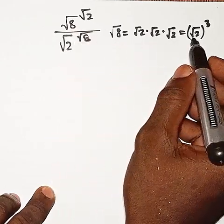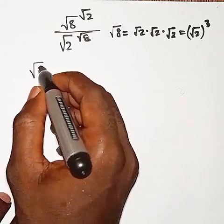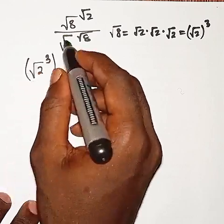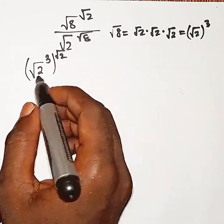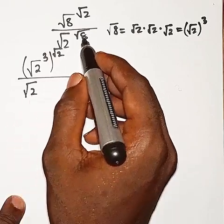We are going to rewrite this root 8 here at the numerator as root 2 raised to power 3. Therefore, we're going to have root 2 to power 3, then we have root 2 there before, divided by here you have root 2.